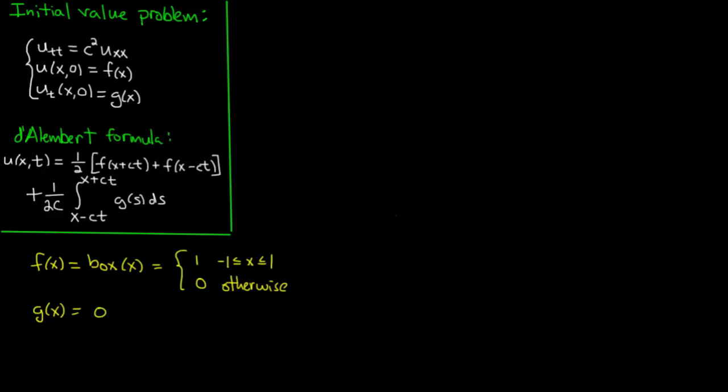If you remember that f is like our initial position for the string and g is the initial velocity, this is like physically stretching the string into the shape of a step function, which looks like this. It is 0 until it reaches the point minus 1, then it steps up to 1, and then it becomes 0 again. So it's like stretching the string into this shape. You can think of these jumps as being just very sharp stretches, and then just releasing it and seeing what happens.